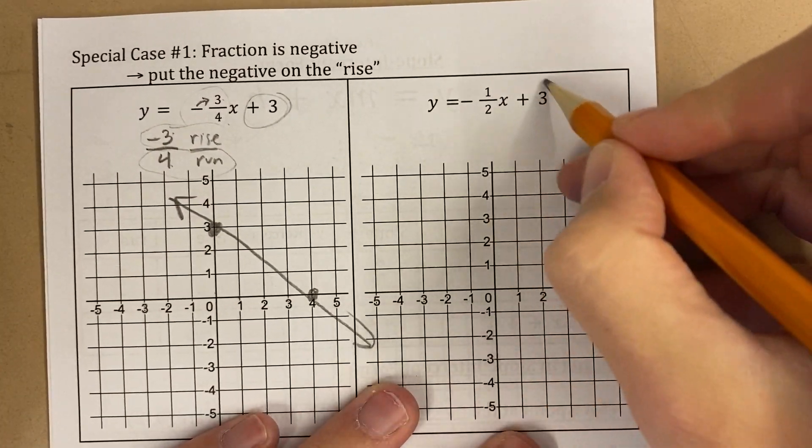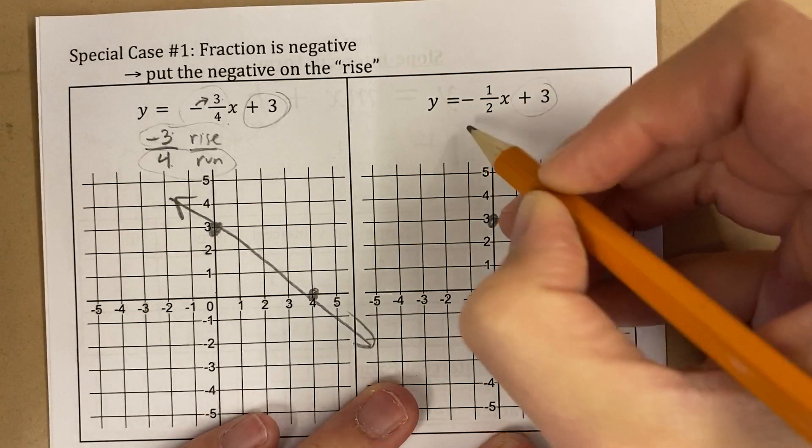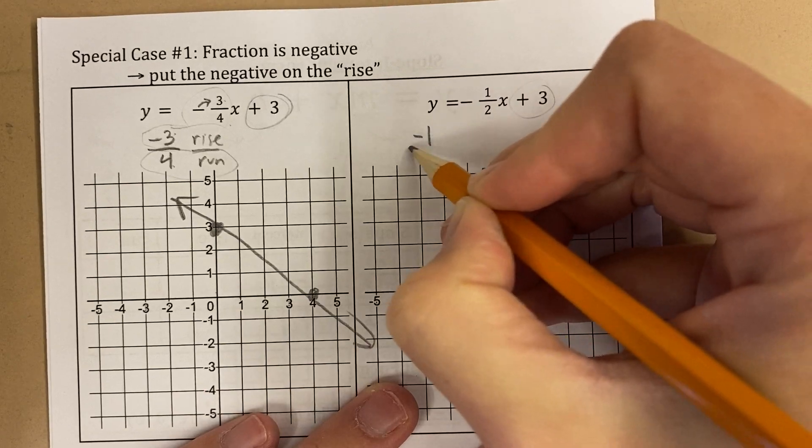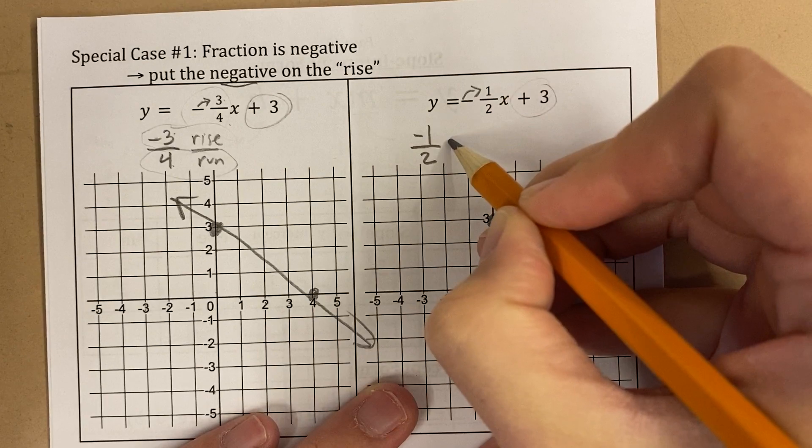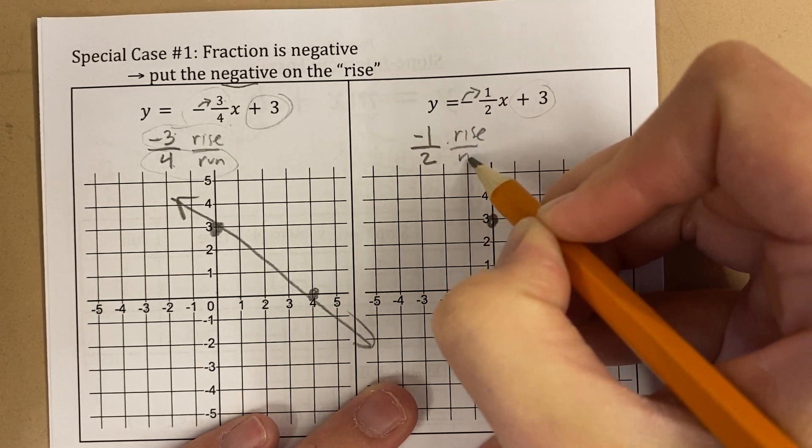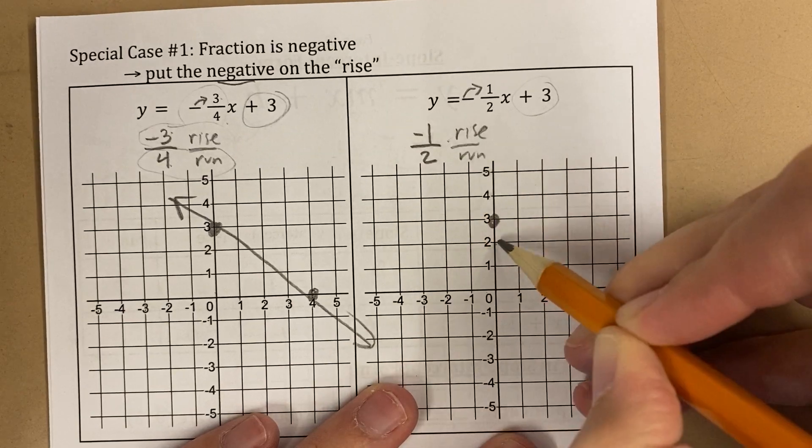Okay, here, again I'm going to start at 3. The fact that the fraction is negative doesn't impact my y-intercept at all. This is negative 1 over 2. Look, I'm attaching the negative to the top. So now my rise is negative 1, so I'm going to go down 1, and my run is 2, right 2.